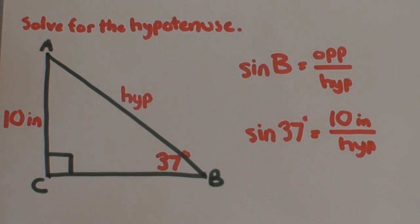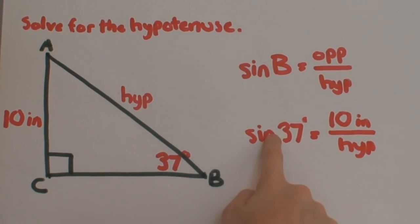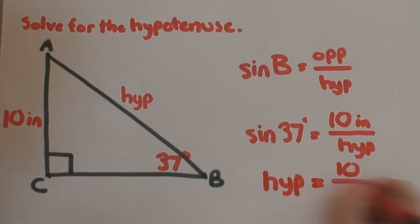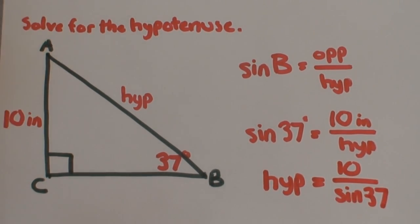What's next is simple algebra. We're trying to isolate the only variable we don't know, which is the hypotenuse. So, once you multiply each side by the hypotenuse, then divide each side by sine 37, what you get in the end is hypotenuse is equal to 10 inches over sine 37.